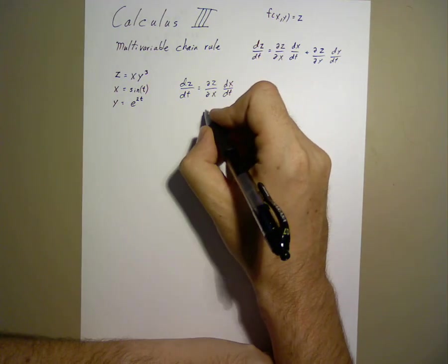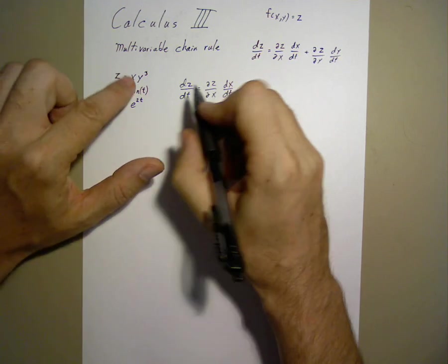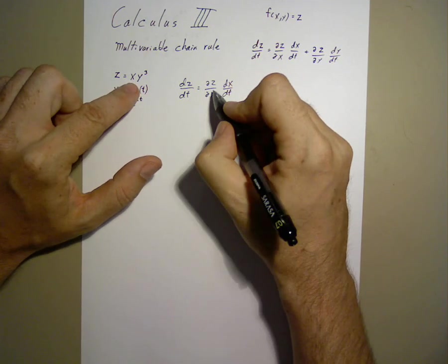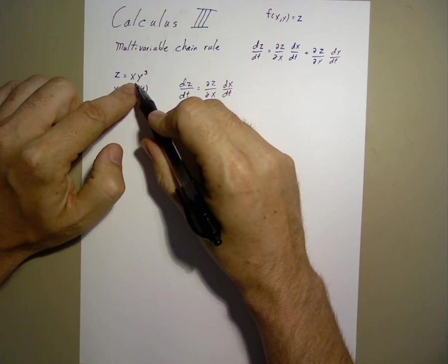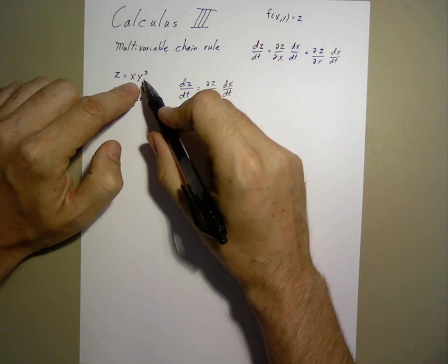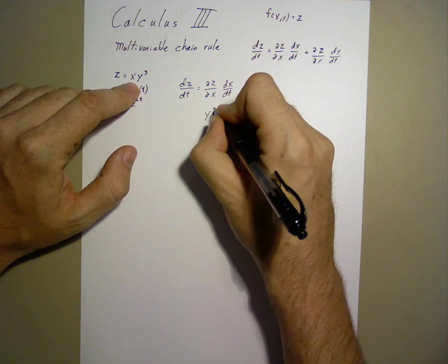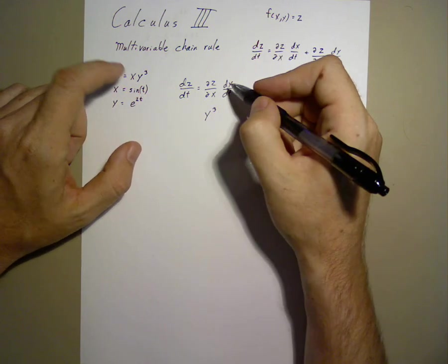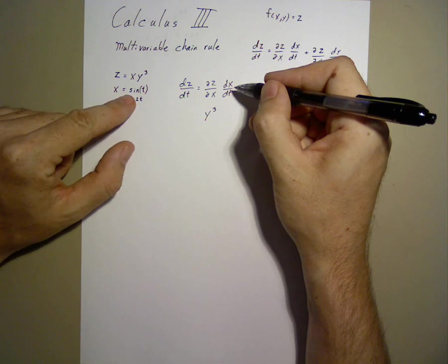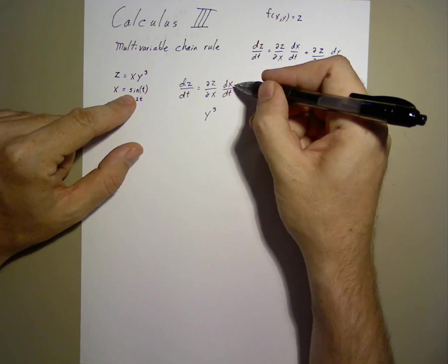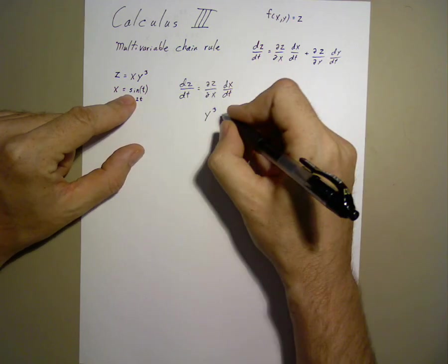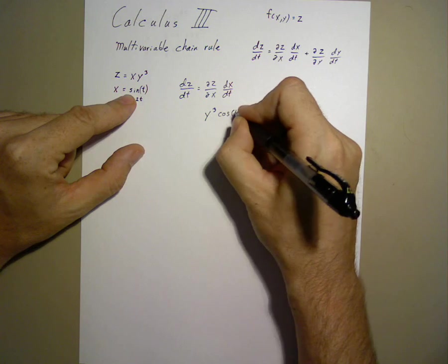We take the partial x derivative, which means we hold y, treat y as a constant. So we get y cubed. The partial derivative of x with respect to time is cosine t.